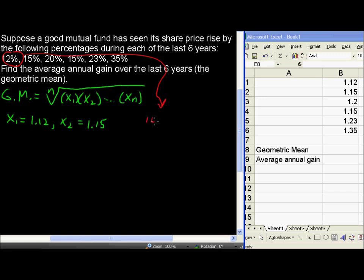We have a 12% gain, so that's 100% of the original plus 12% of the original. So that's 112% of the original, or of the previous year.